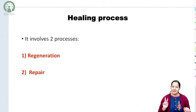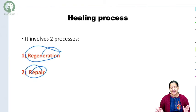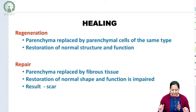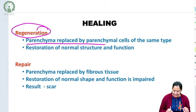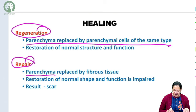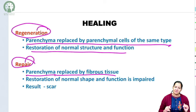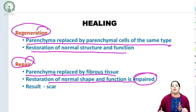There are two processes involved in healing: repair and regeneration. In regeneration, the parenchyma is replaced by parenchymal cells of the same type, so restoration of normal structure and function is possible. But in repair, the lost parenchyma is replaced by fibrous tissue, so restoration of normal shape and function is not possible, and ultimately a scar is formed.